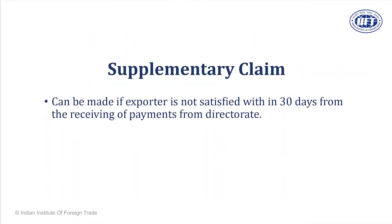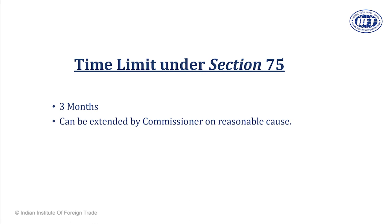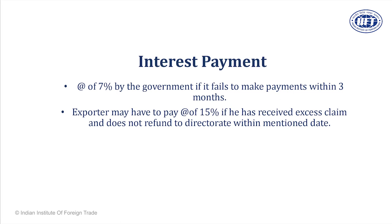In case you are not happy with your drawback claim, you can file supplementary claims — usually within 30 days. Drawback claims are processed within 3 months; if customs fails to process them within that time period, they will pay you interest at the rate of 7%. If erroneously the drawback paid to you is more than entitled, you are supposed to refund it from the date of intimation. Should you fail to do so, you have to pay interest at the rate of 15%. Customs reserves the right under Section 142 of the Customs Act to recollect the revenue erroneously paid as drawback.